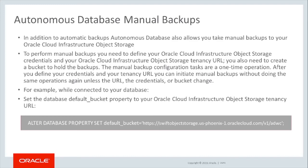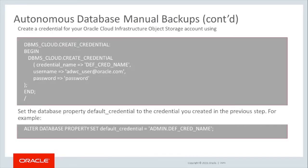For example, while connected to your database, to define your backup bucket, run the following commands. Set the database default bucket property to your Oracle Cloud Infrastructure object storage tenancy with the ALTER DATABASE PROPERTY SET default_bucket equals bucket name command. If you have not already defined the credential for object storage access, you will need to create a credential for accessing the object store. In this example, we create an object store credential named defcredname, and we set it as a default credential with the ALTER DATABASE PROPERTY SET command.